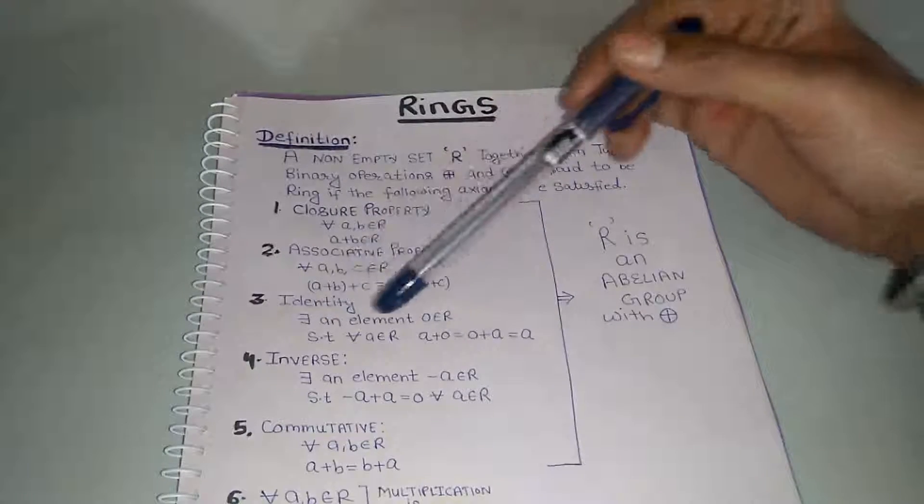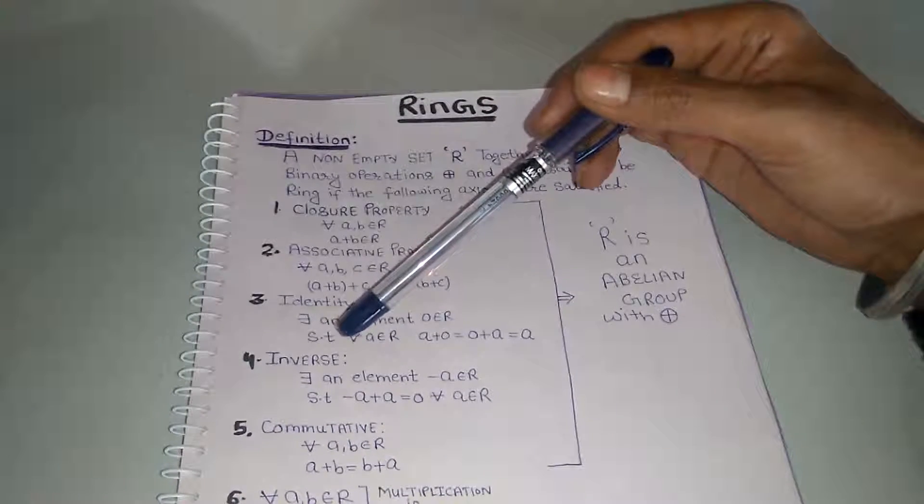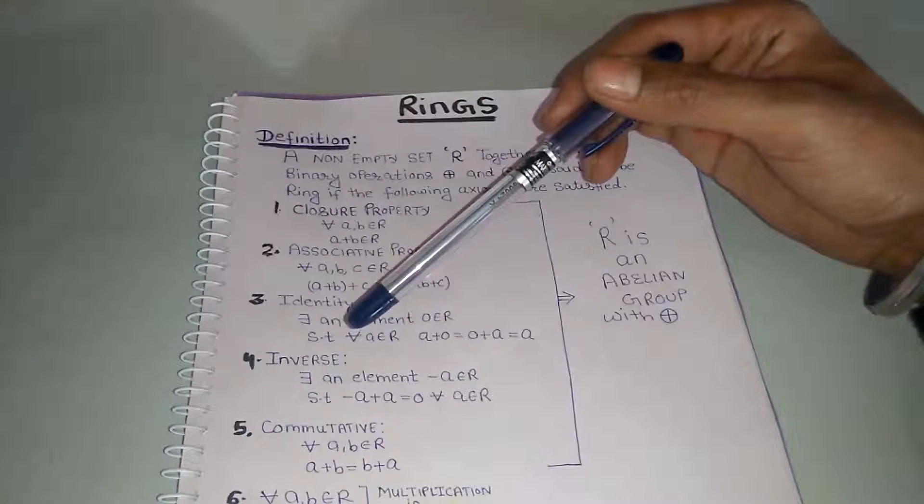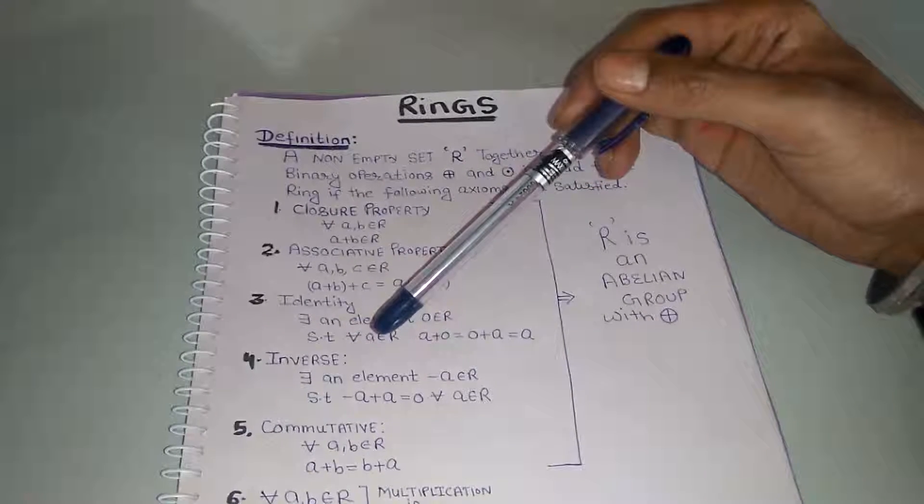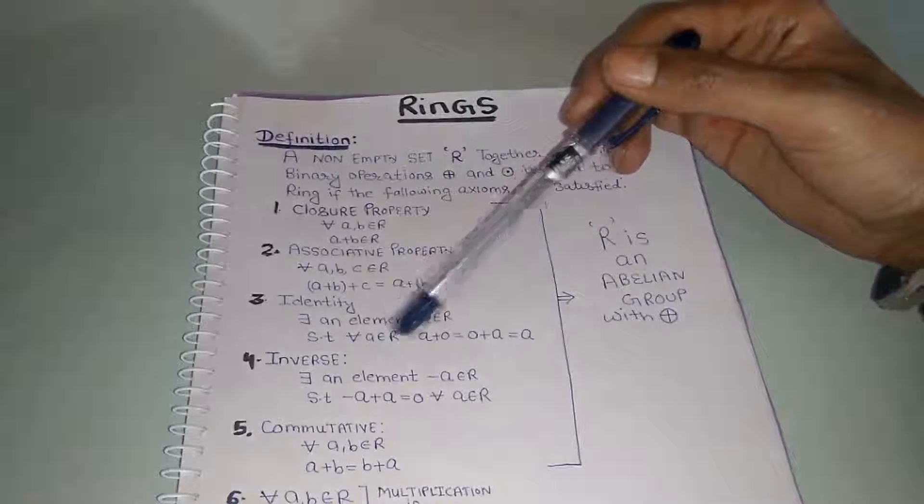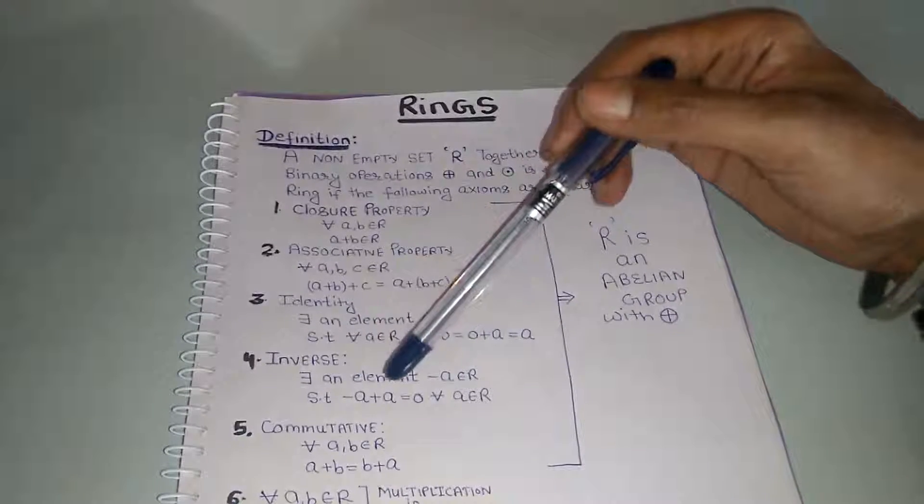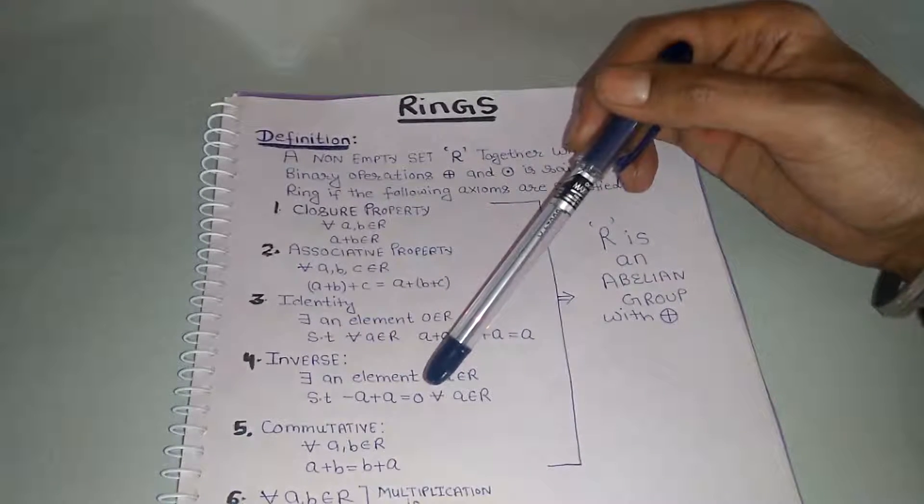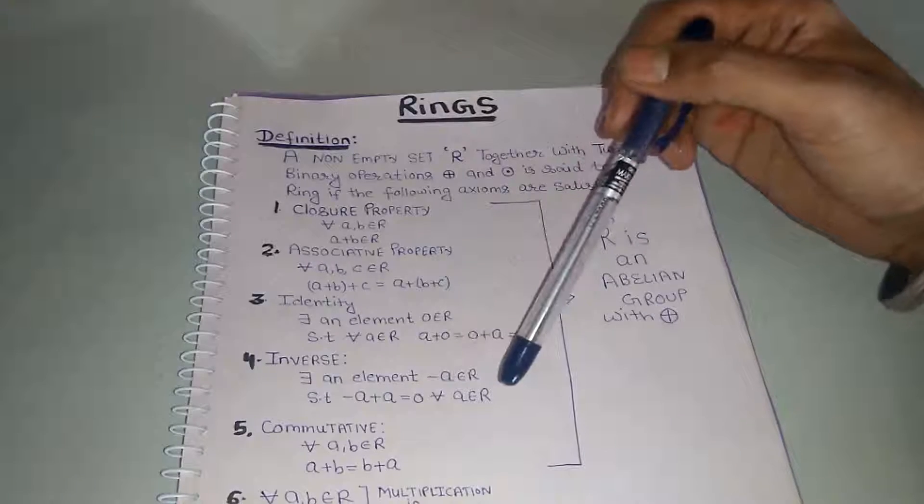And the fourth one is inverse: there exists an element minus A belongs to R such that for all A belongs to R, minus A plus A must be equal to 0 for all A belongs to R.